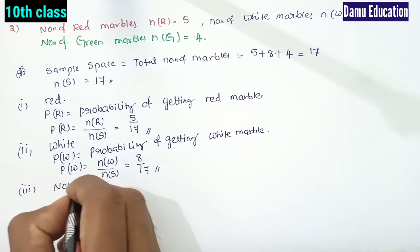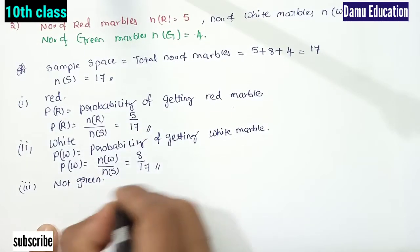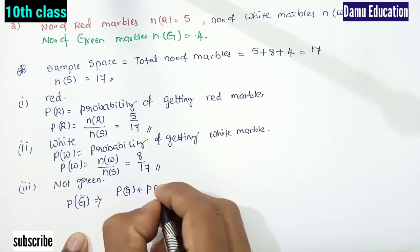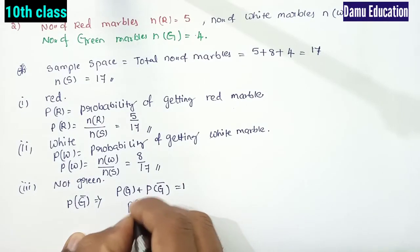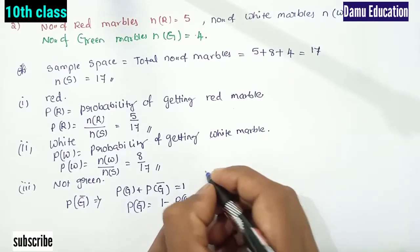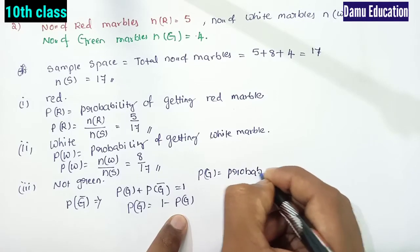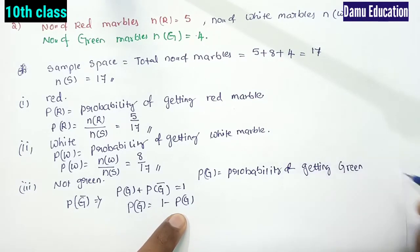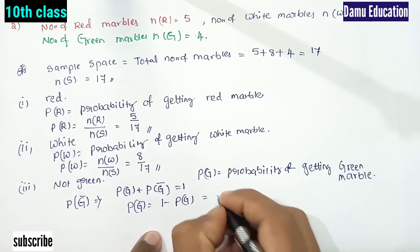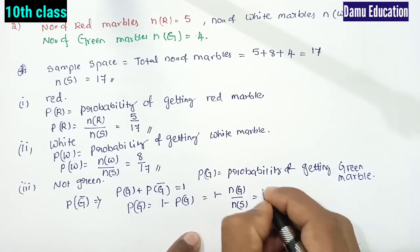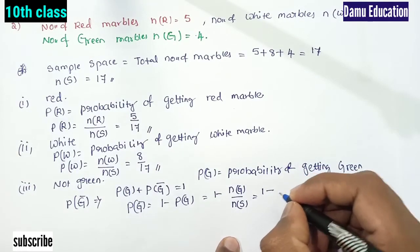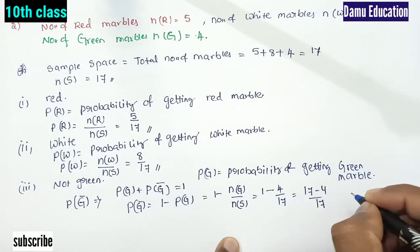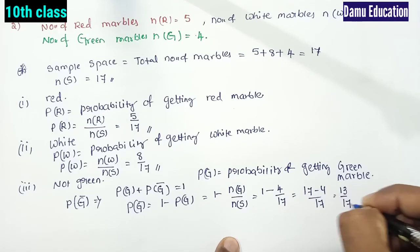Not green — P of G bar. From that, P of G plus P of G bar will be equal to 1. So P of G bar will be equal to 1 minus P of G. Probability of getting green marble: P of G bar = 1 minus n of G by n of S, that is 1 minus 4 by 17. Taking LCM, 17 minus 4, that is 13 by 17.